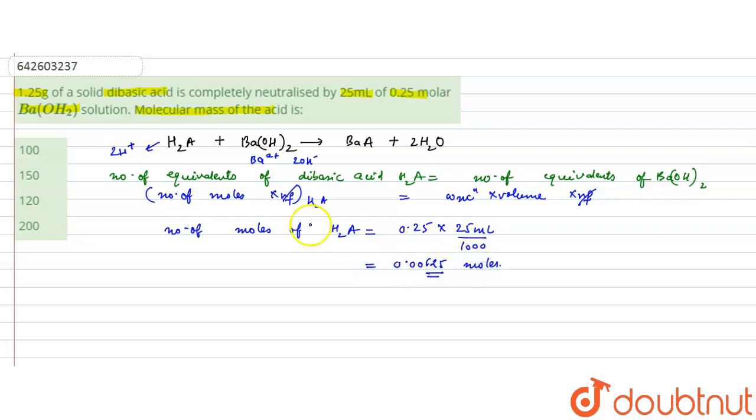And this is given in milliliters so we convert this into liters by dividing by 1000, which gives 0.00625 moles. So we have the moles of the acid. We have to find the molecular mass, so we will use: number of moles is equal to the weight of the substance divided by its molecular mass.